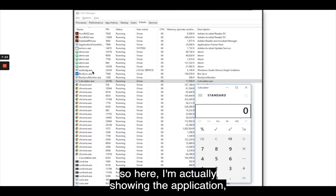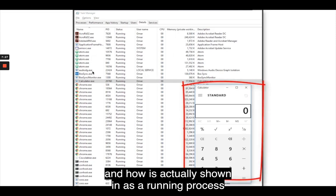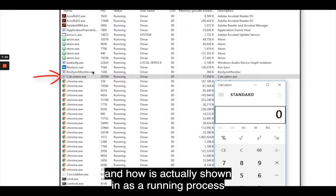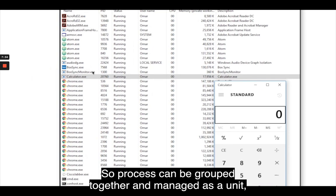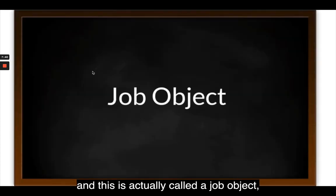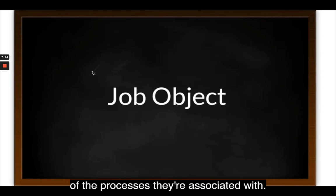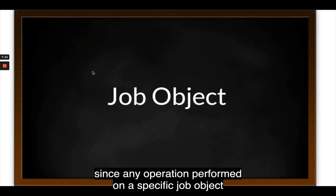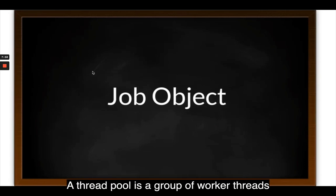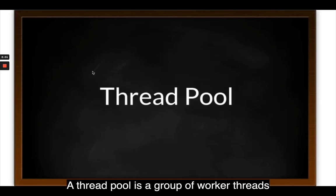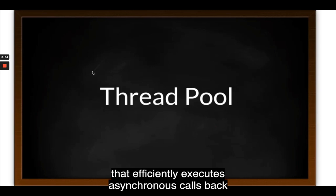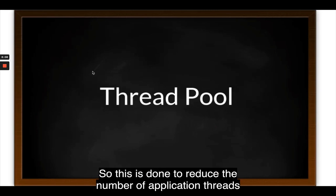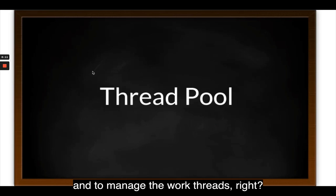Here I'm showing the calculator application in Windows and how it's shown as a running process in the Windows Task Manager. Processes can be grouped together and managed as a unit — this is called a job object — and can be used to control attributes of the associated processes. Grouping processes together simplifies impacting a group of processes, since any operation performed on a job object will impact all associated processes.